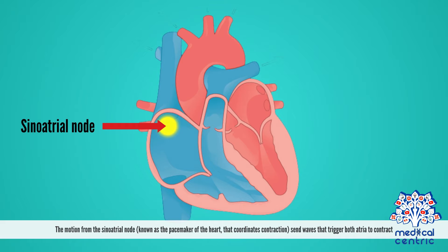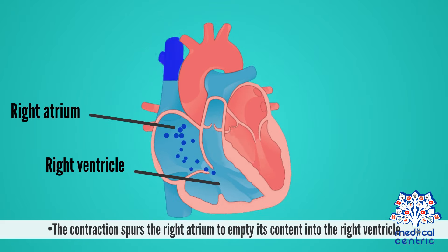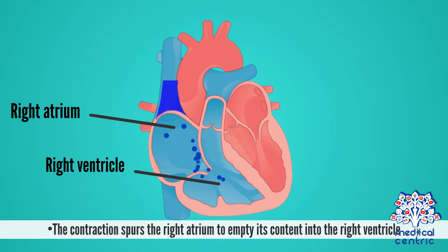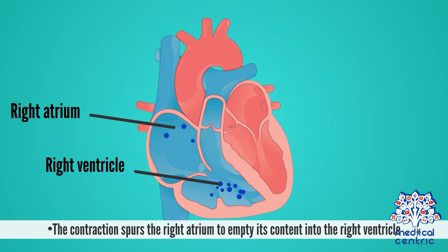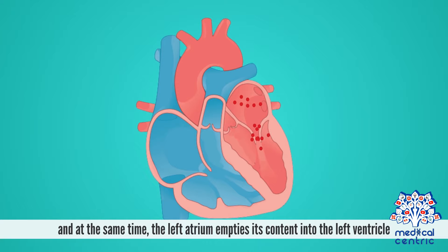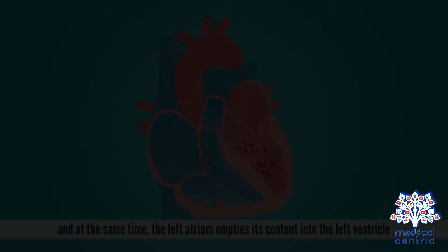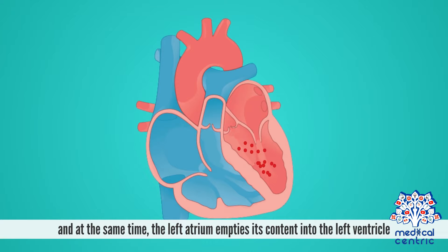The motion from the sinoatrial node, known as the pacemaker of the heart, that coordinates contraction, sends waves that trigger both atria to contract. The contraction spurs the right atrium to empty its content into the right ventricle, and at the same time, the left atrium empties its content into the left ventricle.